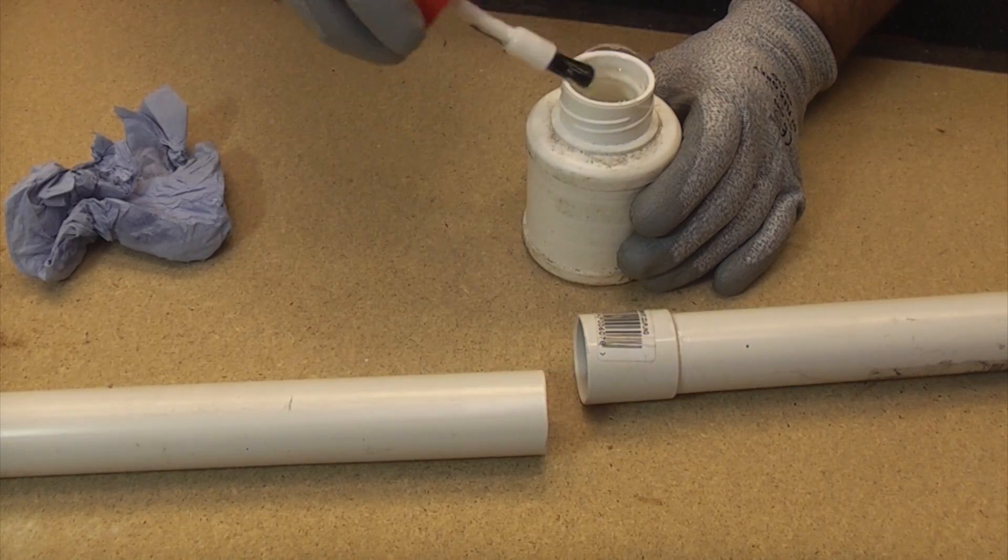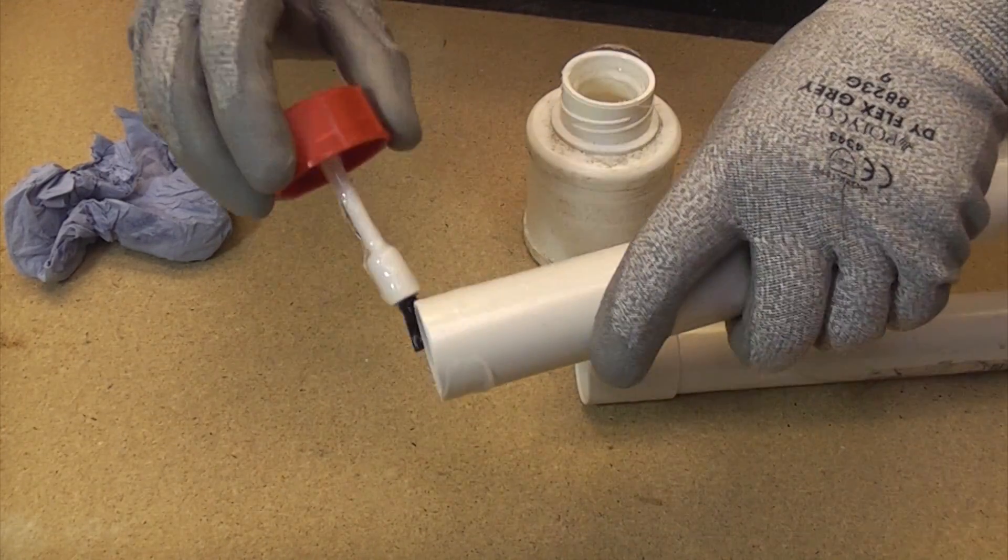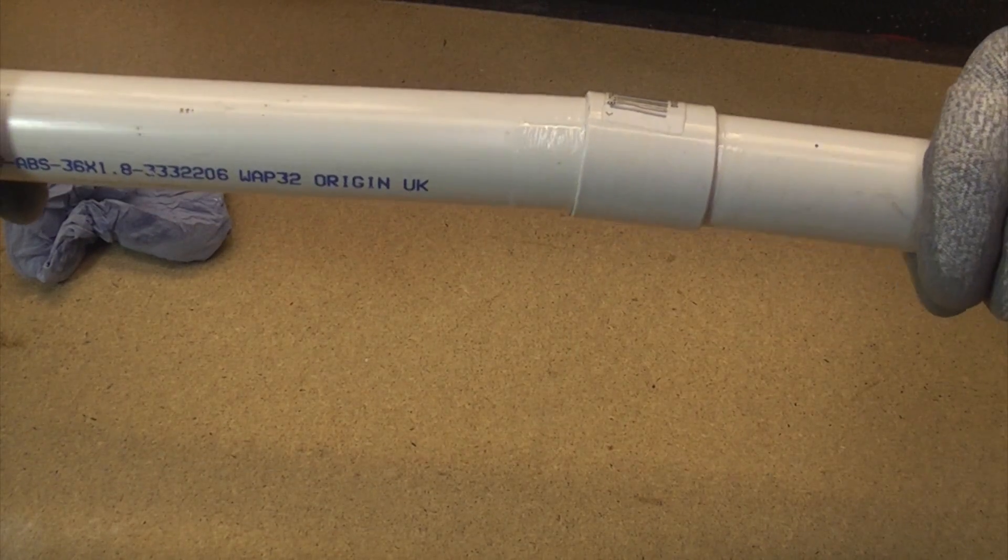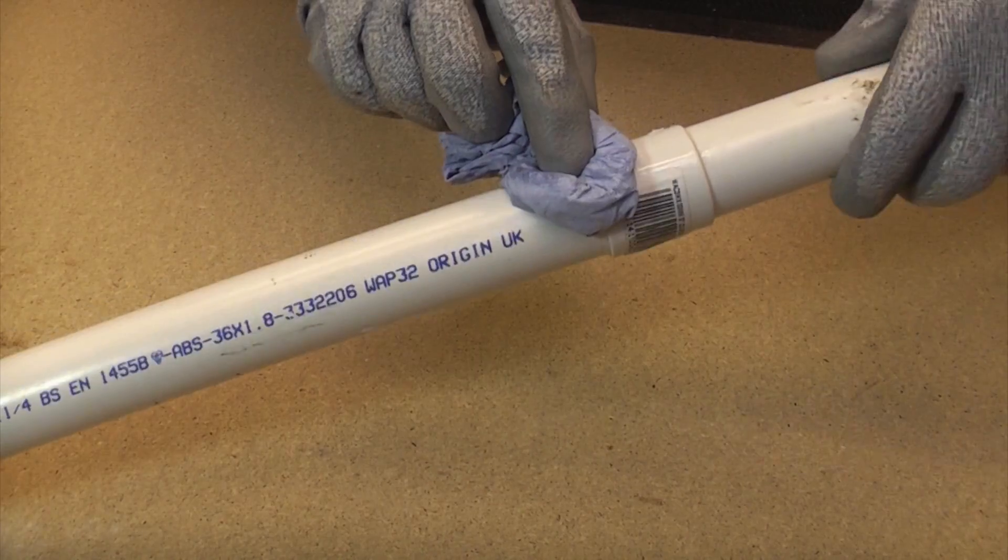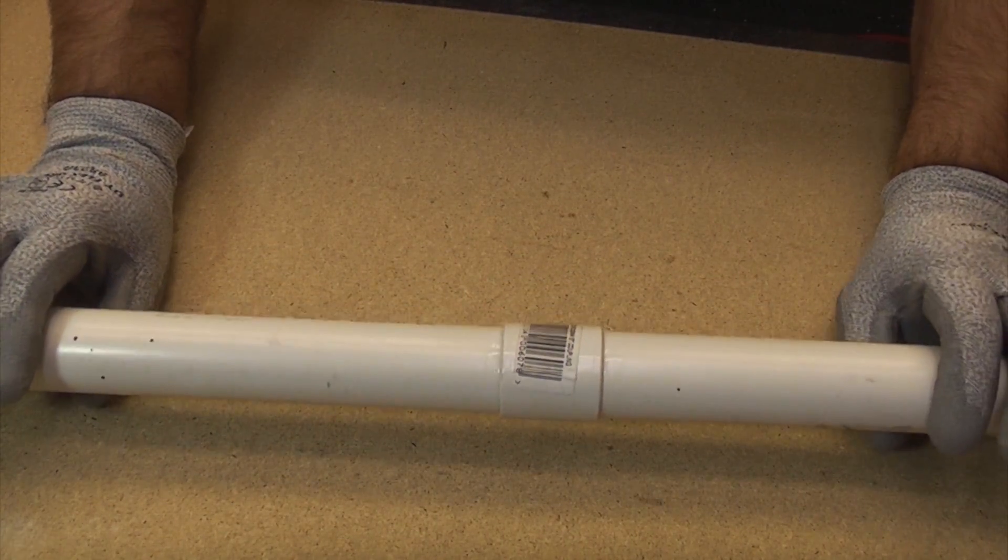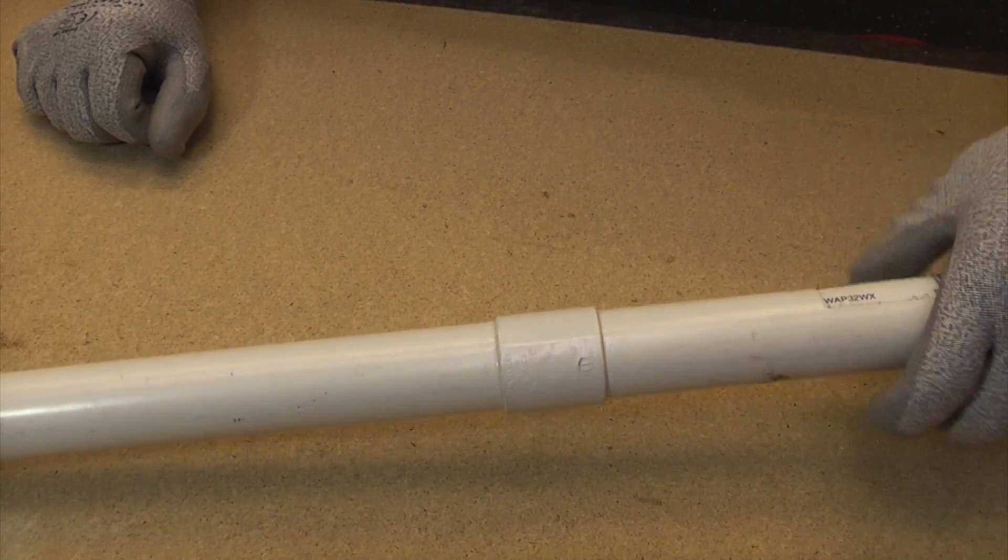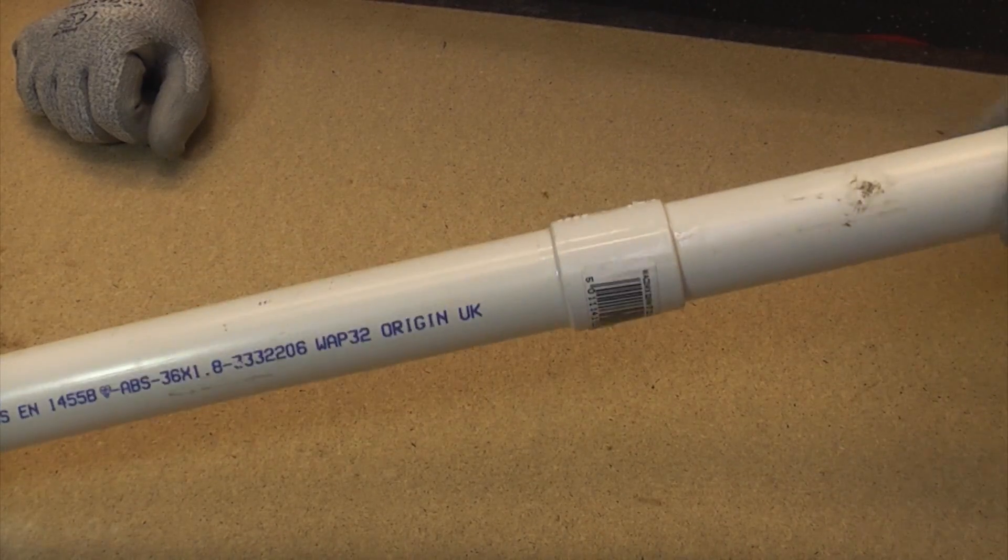We'll do the same on the other side. Again, we'll brush the solvent all the way around the pipe. Now we're going to push that into the socket using a twisting motion, then wipe off any excess. If we leave that now for five minutes and come back to it, there's no chance at all of ever pulling that apart. Once the solvent has evaporated, you can guarantee that joint will never leak. It's highly unlikely that a joint made with solvent weld and prepared correctly will ever leak.